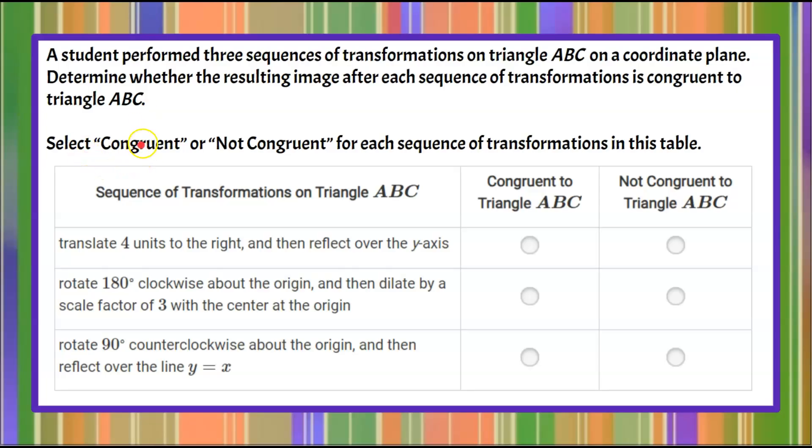So here you're going to select congruent or not congruent for each sequence of transformations in the table. So the first, the second, and the third. So here we have three sequences of transformations and you're going to determine if each has a resulting image that is congruent or not congruent to the original triangle.